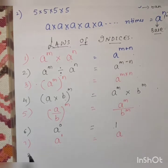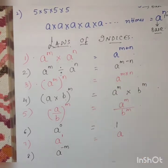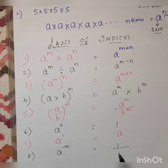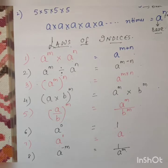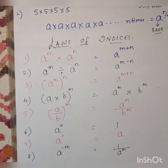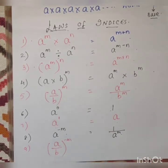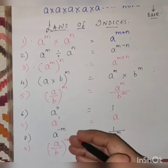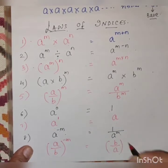If you want to change the sign of the power, simply take the reciprocal of the base - reverse it, bring the numerator to the denominator. So A upon B the whole raised to minus M becomes B upon A the whole raised to M.